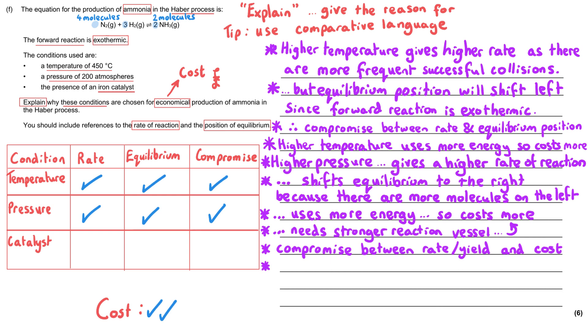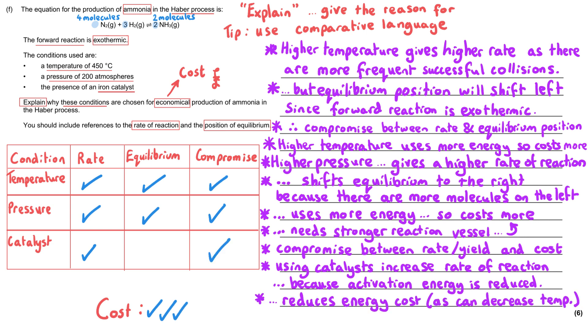And then if we consider the catalyst, we know that catalysts, when we use them, we get a higher rate of reaction because the activation energy is lowered by providing an alternative reaction pathway. And so because of that, this will mean that we will be reducing energy costs potentially because we don't need to use such high temperatures to get a fast rate of reaction.